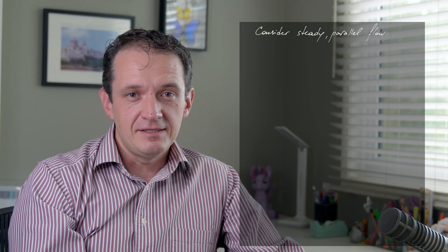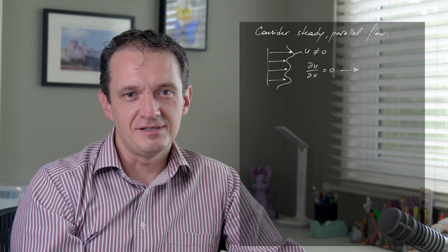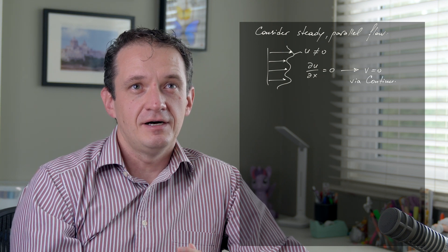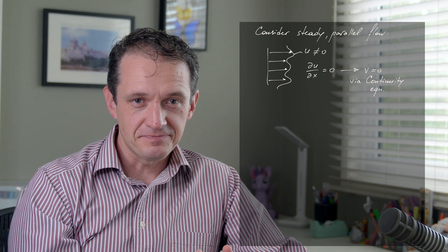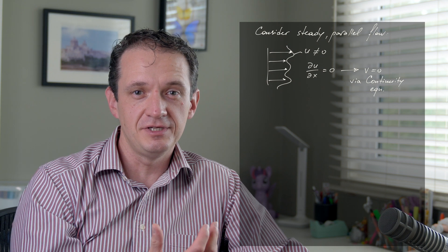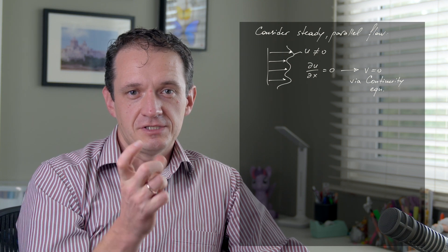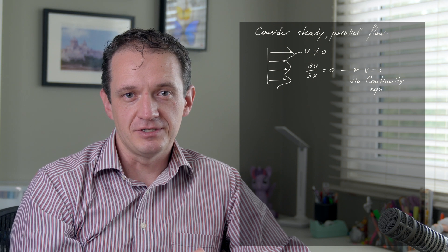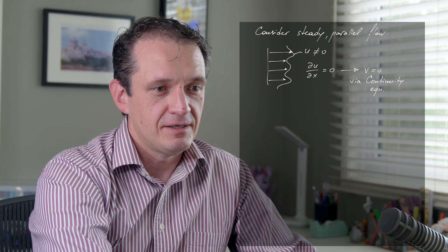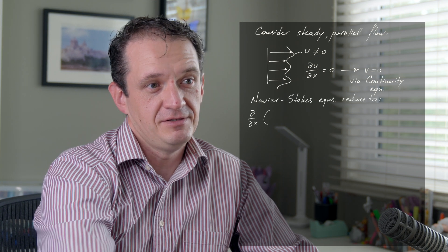We can solve them if we assume steady parallel flow. In that case, the inertia term in the equations drops out — but not because the Reynolds number is small. It drops out because of the combination of the continuity equation with the parallel flow assumption. If the velocity gradient du/dx in the x direction is equal to zero, that forces the velocity component in the other direction to be zero as well. So we have a form of the Navier-Stokes equations that is fairly simple.